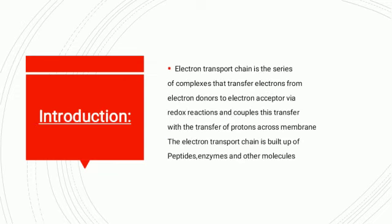Electron transfer chain is a series of complexes that transfer electrons from electron donors to electron acceptors, where it couples reactions and couples this transfer with the transfer of protons across a membrane. The electron transfer chain is built upon proteins, enzymes, and molecules.